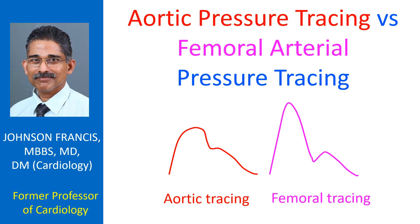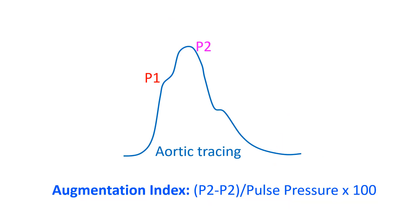Aortic pulse wave velocity and augmentation index have also been shown to predict morbidity and mortality due to cardiovascular disease in multiple populations in meta-analysis. Augmentation index is measured from the central aortic waveform and is a measure of systemic arterial stiffness.